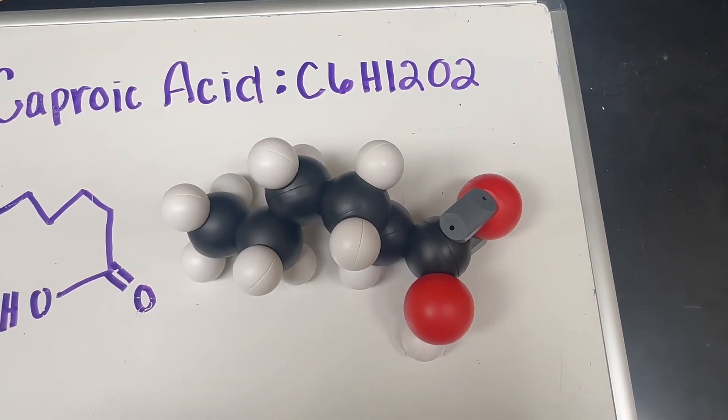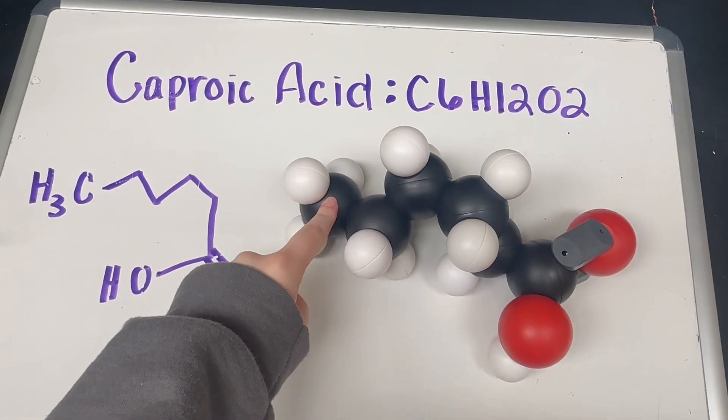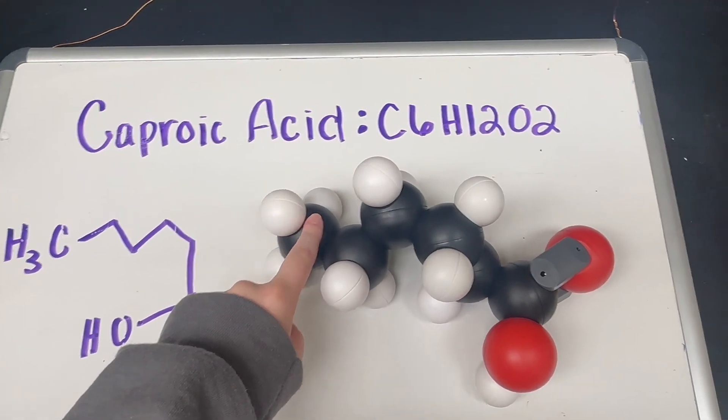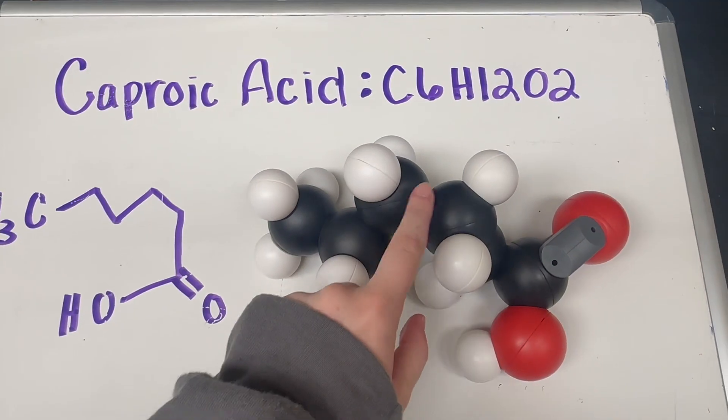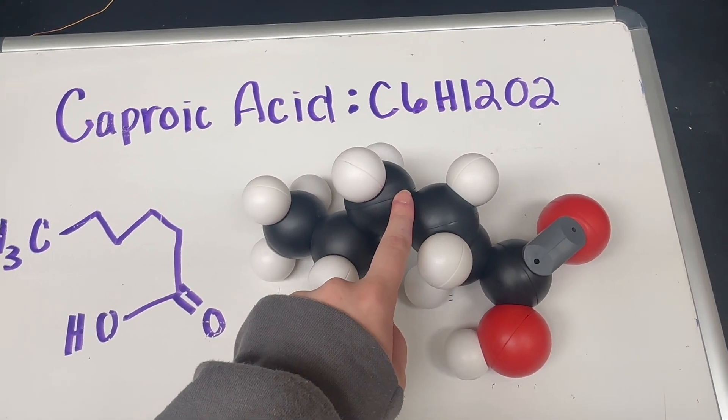As you can see from the completed structure, there is a methyl group right here, meaning that the carbon is bonded to three hydrogen atoms. An alkane carbon chain with methylene groups throughout here, meaning a carbon bonded to two hydrogen atoms.